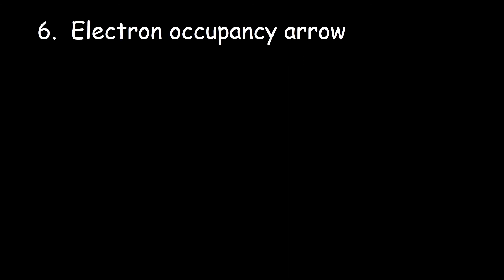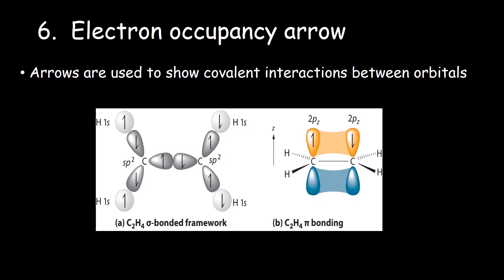Arrows in orbitals can also be used to show the covalent bonding electrons between valence orbitals. In this diagram, this is an example of covalent bonding in ethene. On the left is the sigma framework where this involves only the sigma bonding electrons that lie along the internuclear axis. For example,